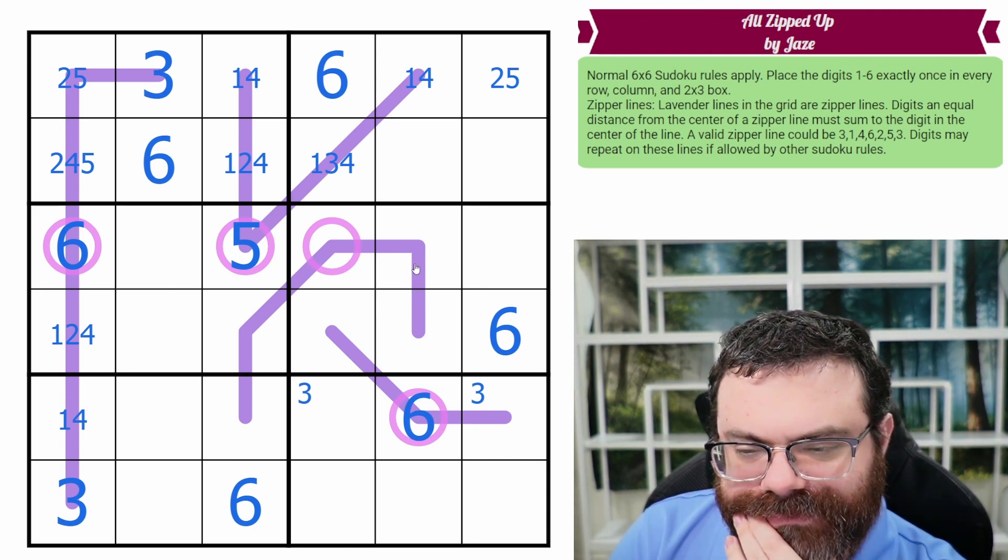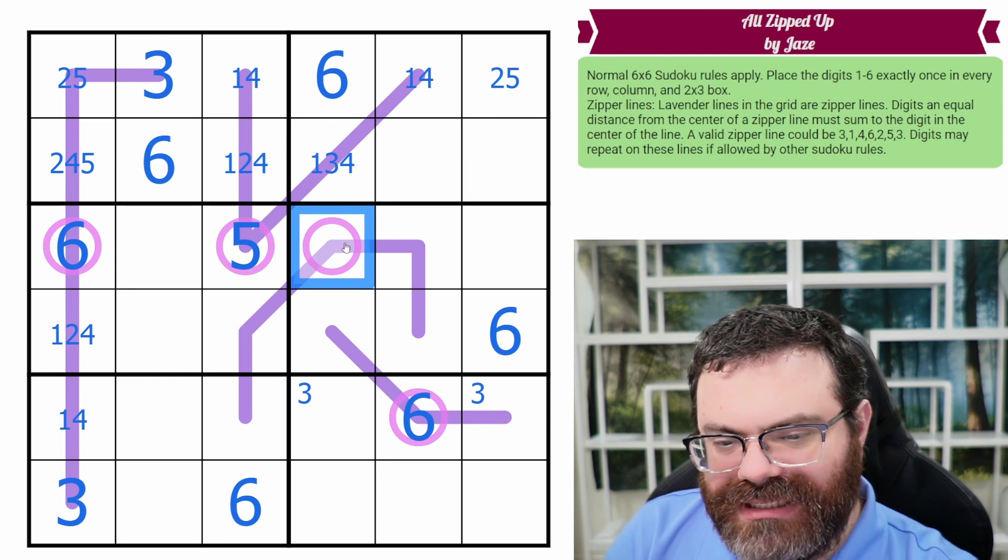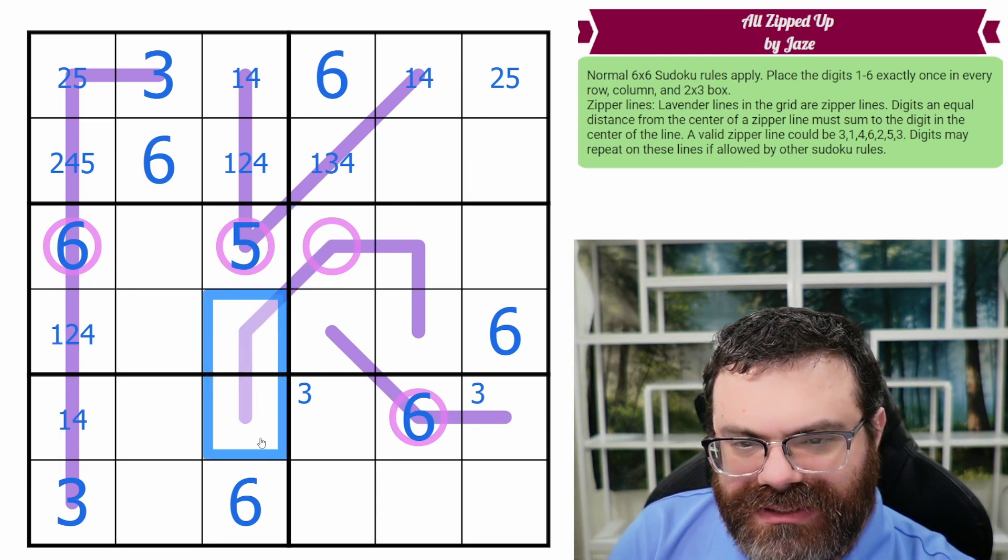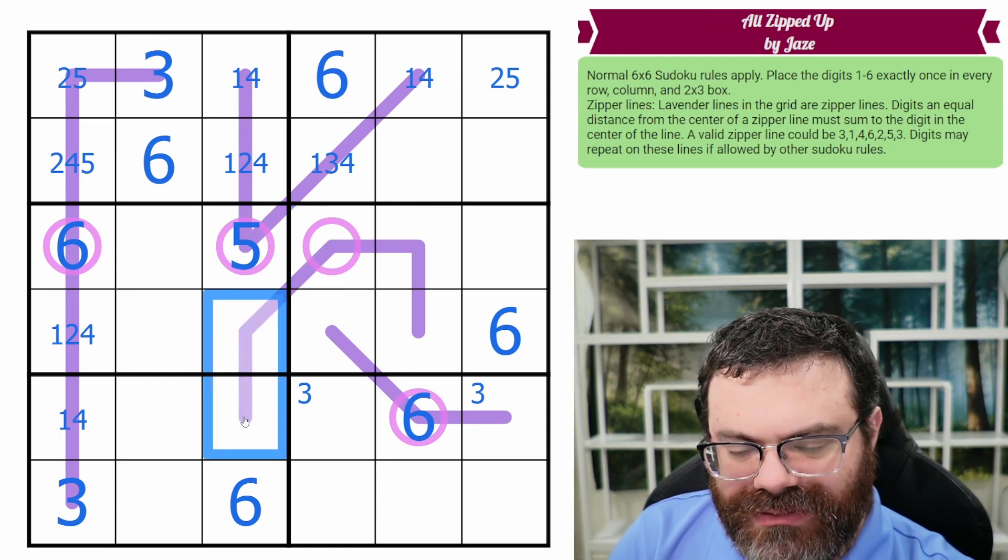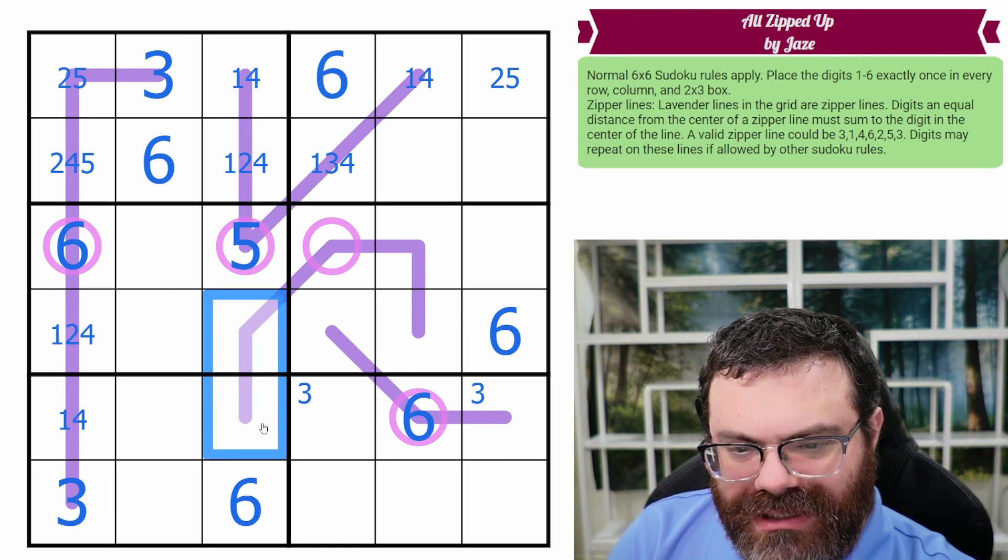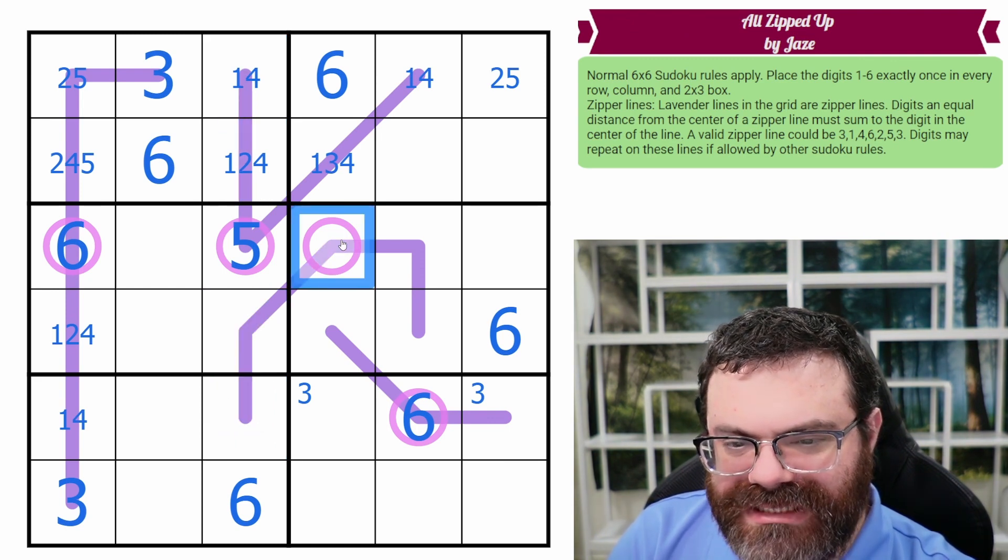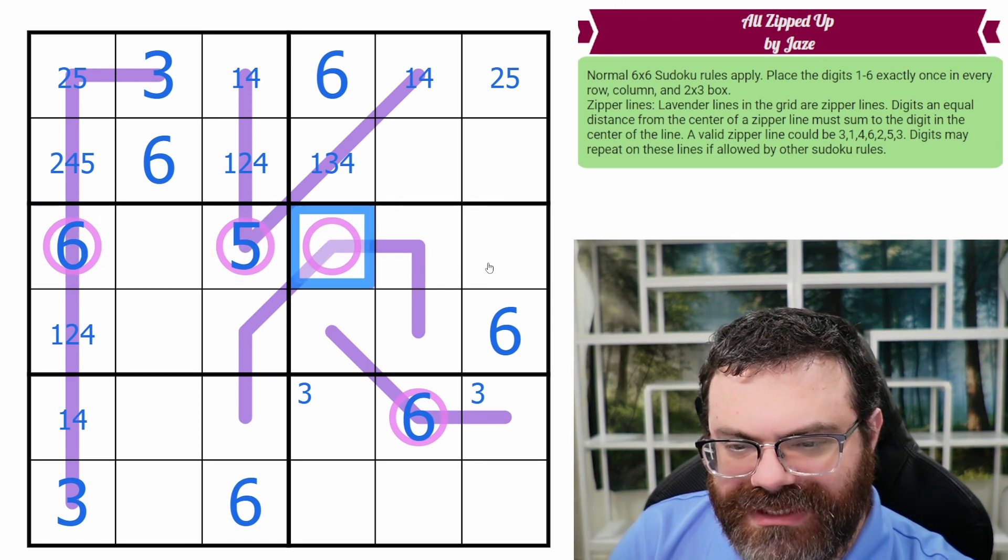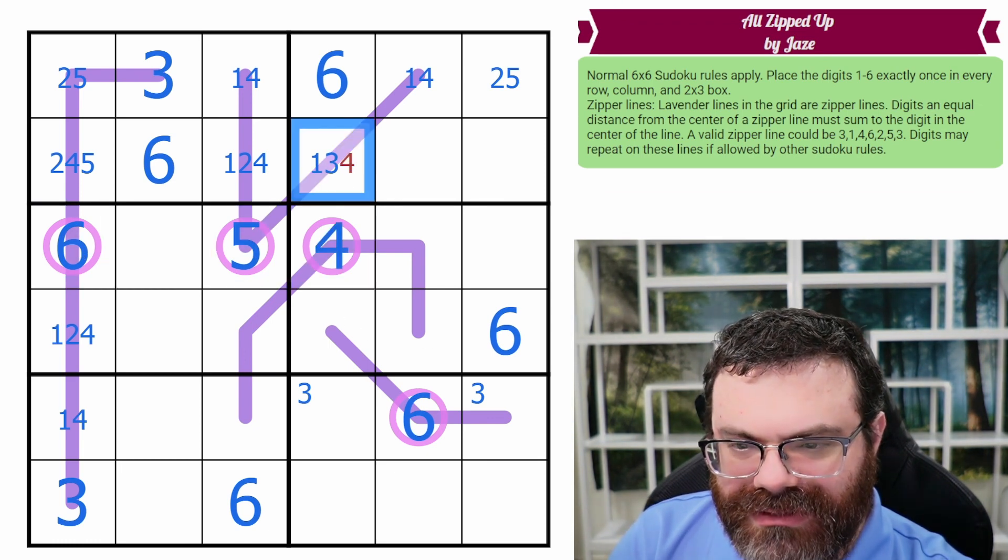What do we do here? Is it this cell here? Well, this has a three on it because the three is not up here. Which means this has to be at least four, but it can't be five or six. So it has to be four. Nice.